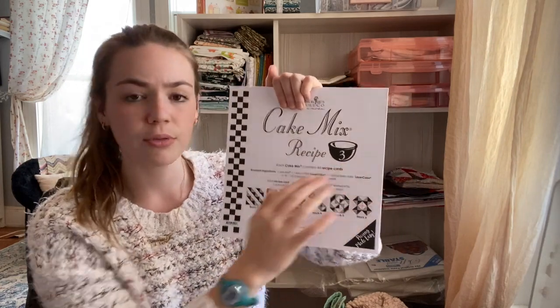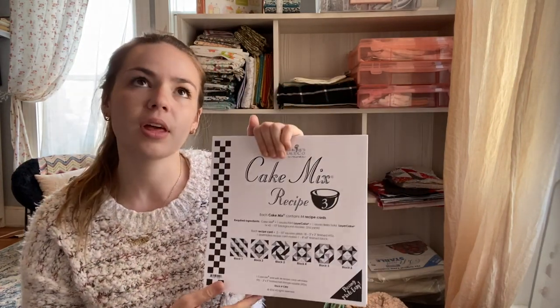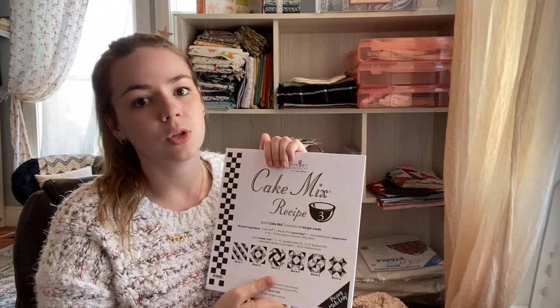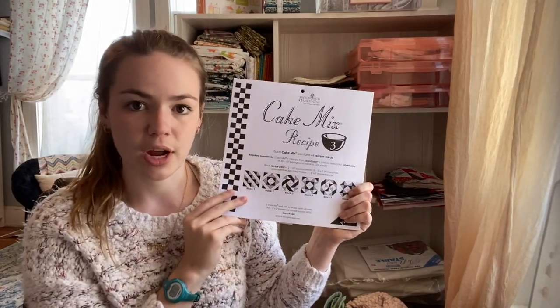But other recipes, this one is number 3, other recipes make half-square triangles of different sizes. Some of them, like recipe 5, will also make 4 patches and I've used that one as well. But this is my favorite just for making regular 2 inch finished half-square triangles.